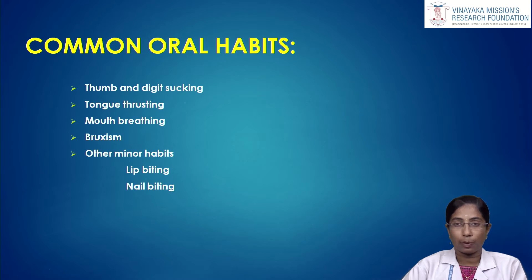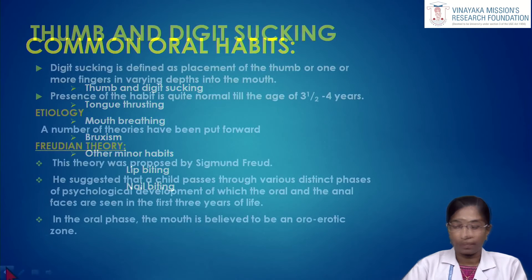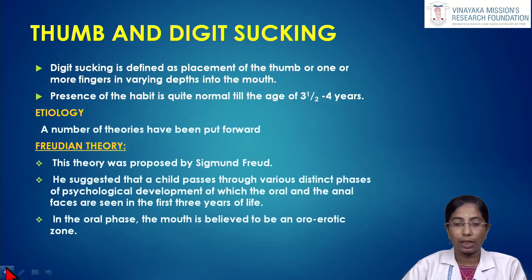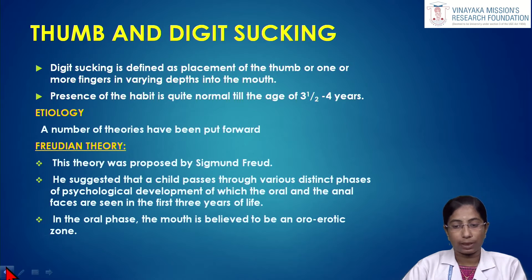The commonly seen abnormal oral habits in children are thumb and digit sucking, tongue thrusting, mouth breathing, bruxism, and other binary habits such as lip biting and nail biting. Digit sucking is defined as the placement of the thumb or one or more digits in varying depth into the mouth. The presence of this habit is quite normal till the age of three to four years.